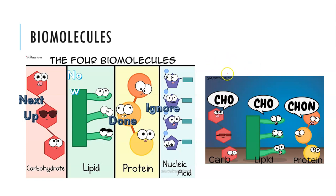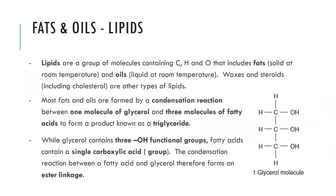The empirical formula or atoms contained in each biomolecule are carbon, hydrogen, and oxygen for carbohydrates and lipids. With proteins, we add in nitrogen and a little bit of sulfur. Lipids are a group of molecules containing only carbon, hydrogen, and oxygen — referred to as fats, which are solid at room temperature, or oils, which are liquid at room temperature. Waxes and steroids including cholesterol are other types of lipids but we don't look at those in detail here.